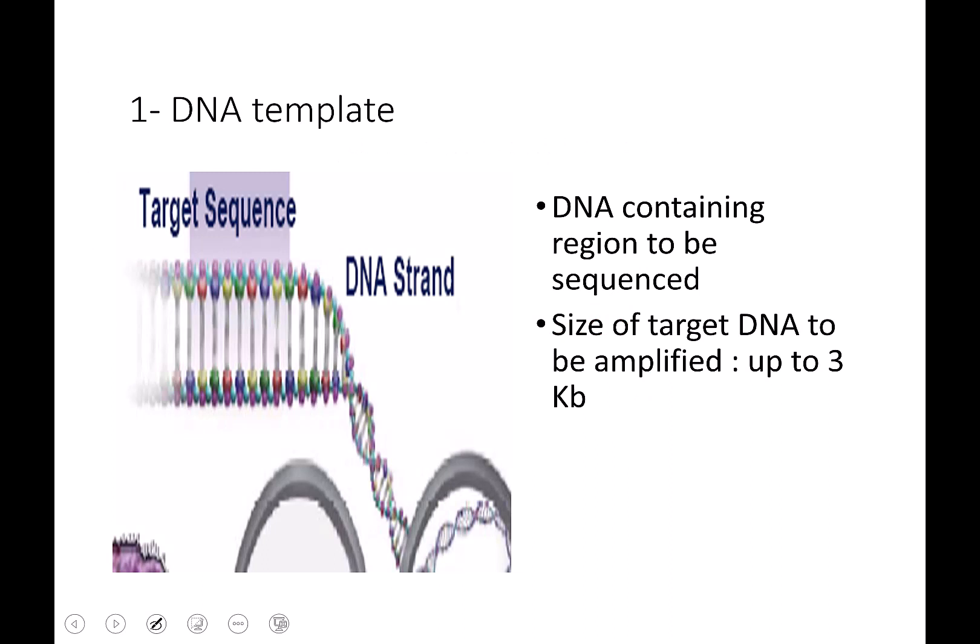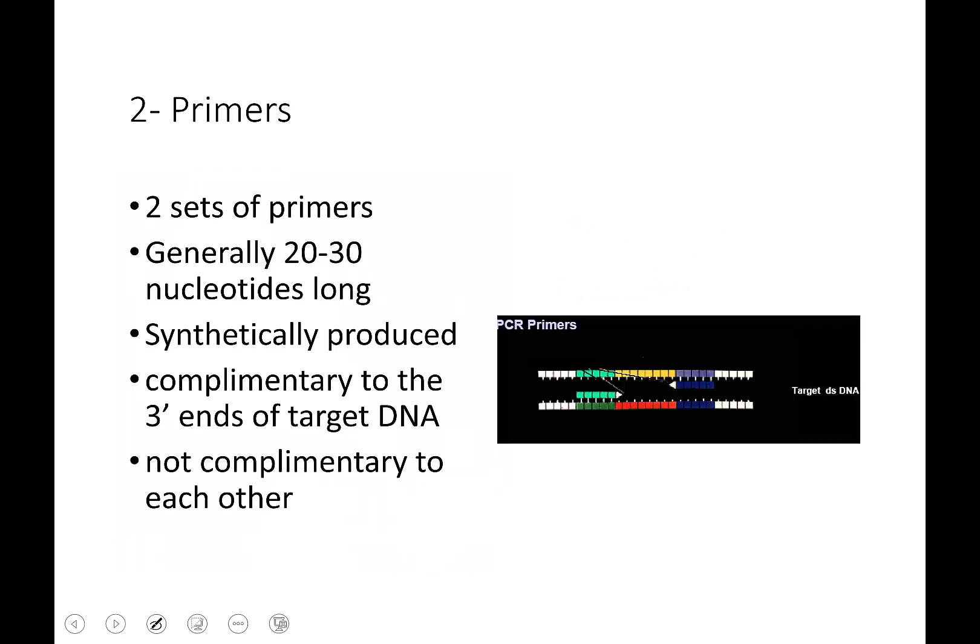And then you just stick it in your little PCR machine, and out comes your amplified DNA. So what is the process? How does this work? So first of all, you need the template, which is the DNA containing the region to be sequenced. I don't think sequence is a proper term here. It should be the region to be amplified. And for PCR, it can be up to three kilobases long.